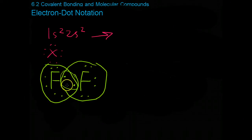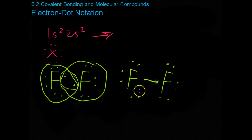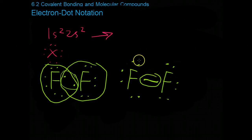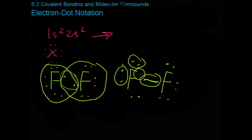This shared pair can also be represented by a line. So we could alternately draw this as F with its 7 electrons, the other fluorine with its 7 electrons, covalently bonded, represented by this line. In this instance, there is the one bonded pair of electrons in the middle represented by the line, and the rest of these are what are known as unbonded pairs of electrons, meaning they aren't involved in the bond between the two atoms.